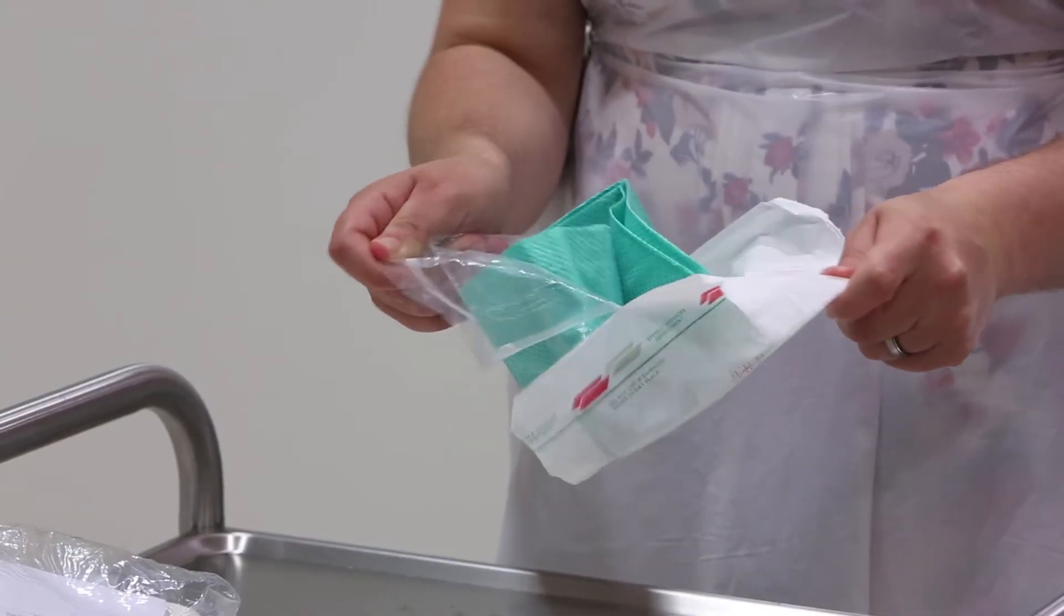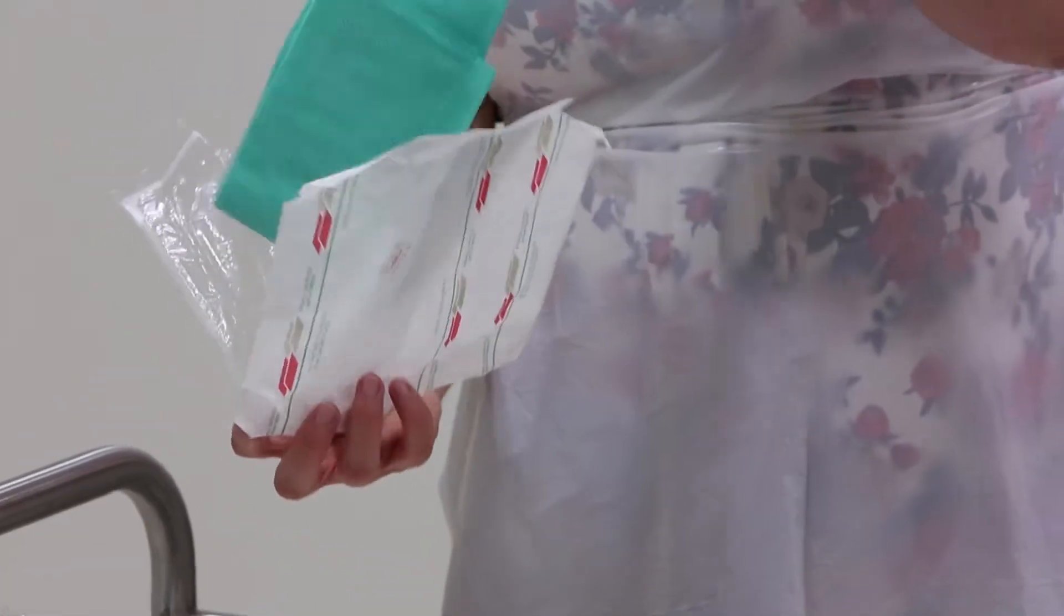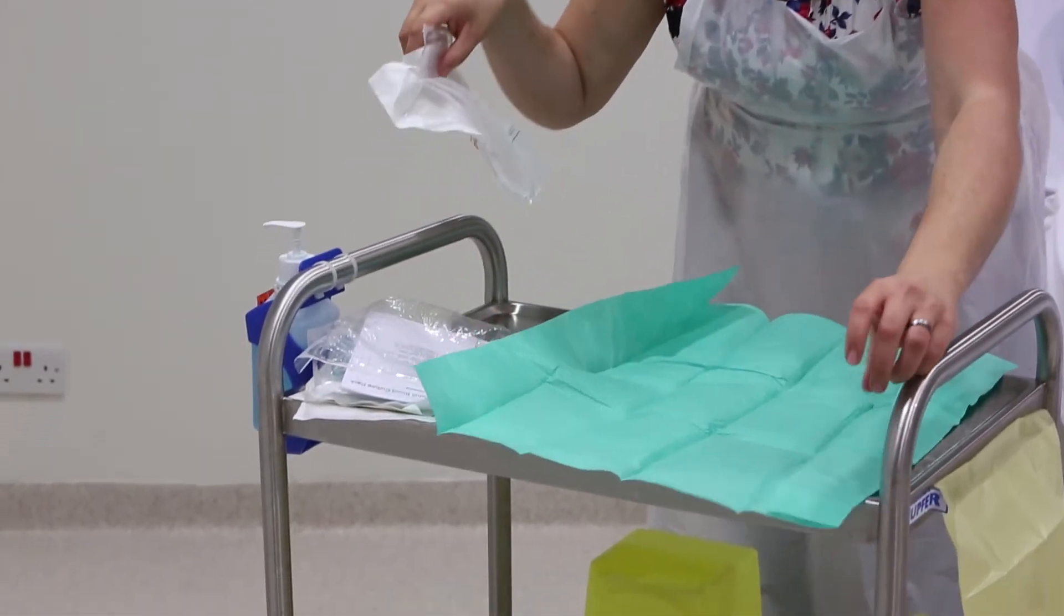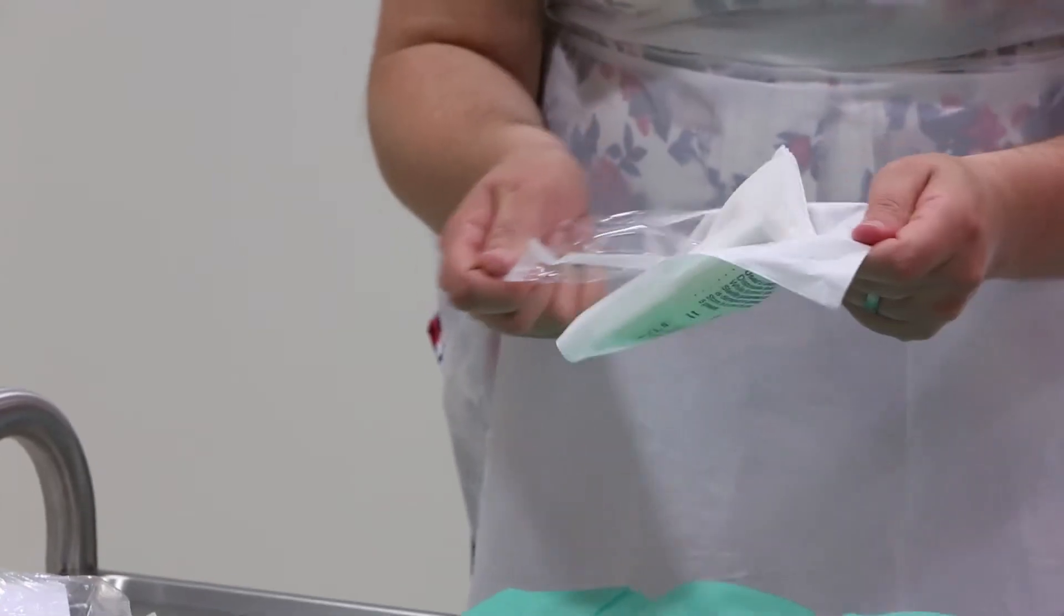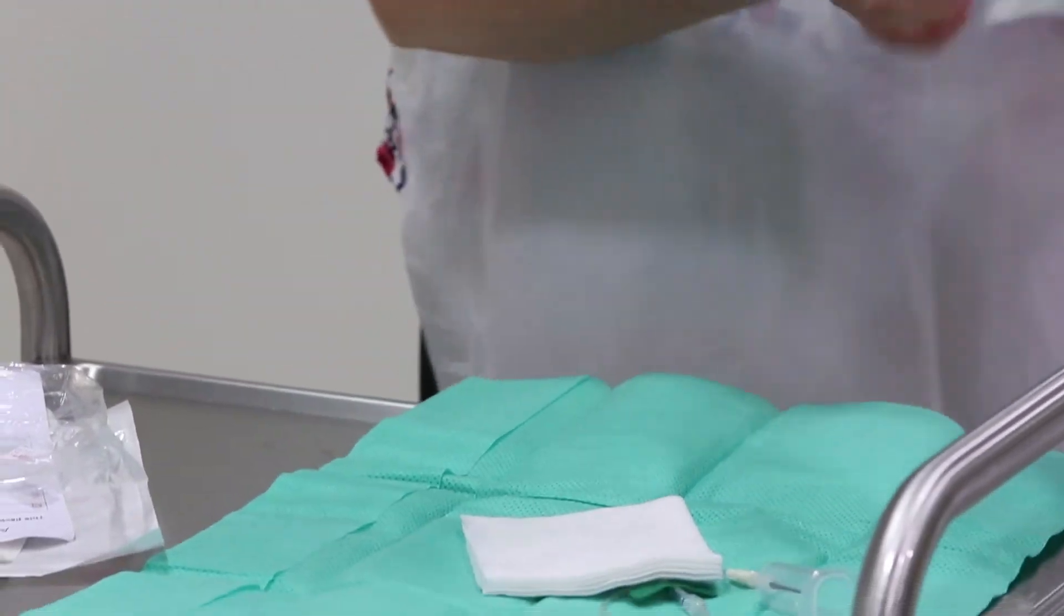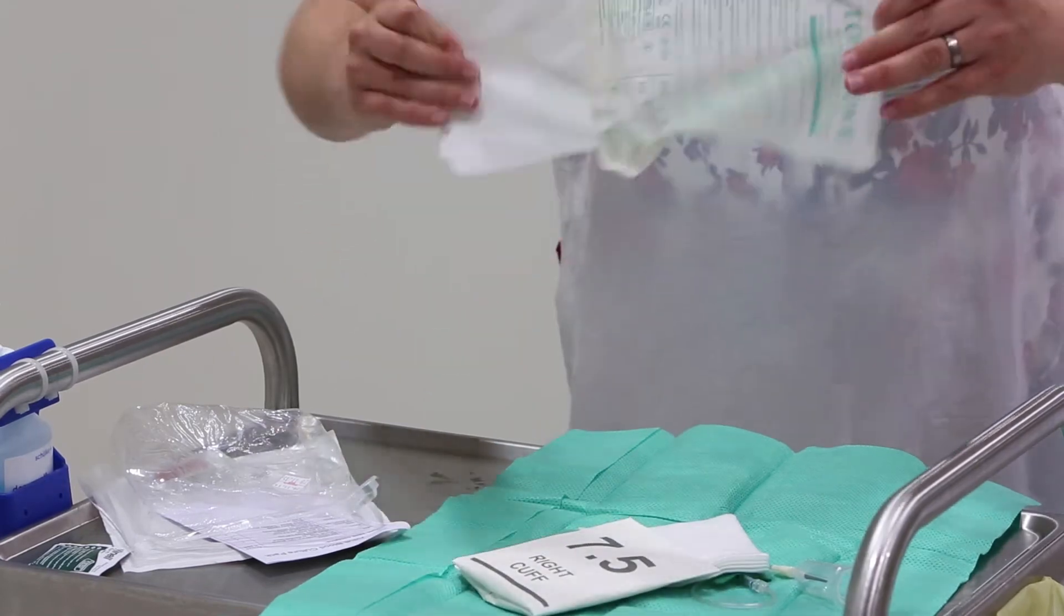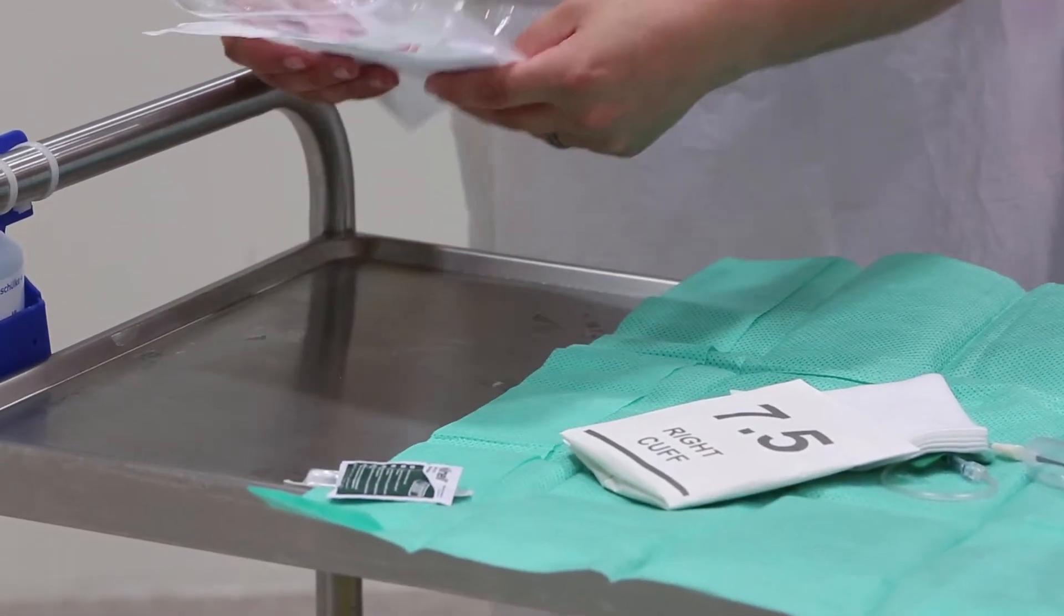Carefully open the sterile towel onto your work surface by grabbing it at the edges, making sure not to contaminate the towel whilst doing so. Open each piece of equipment except for the chloraprep applicator and the chlorhexidine and alcohol wipe onto the sterile field, once again taking care not to contaminate the sterile items whilst doing so.